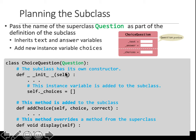The subclass will have its own constructor, meaning you can define other variables in here. So the text and the answer will be in the question class and will be called as well. But in here we have the instance variable 'choices', which is a list. In the constructor, it is initialized as an empty list.